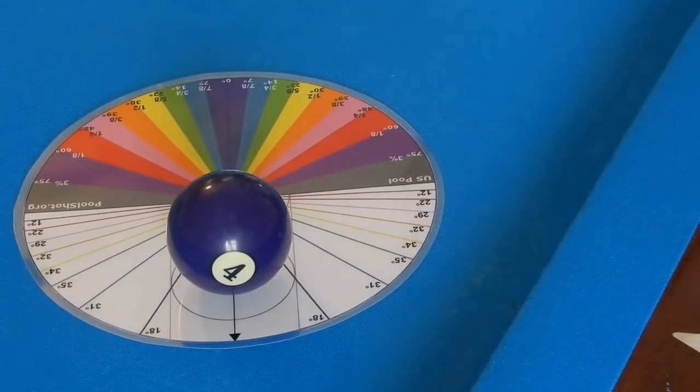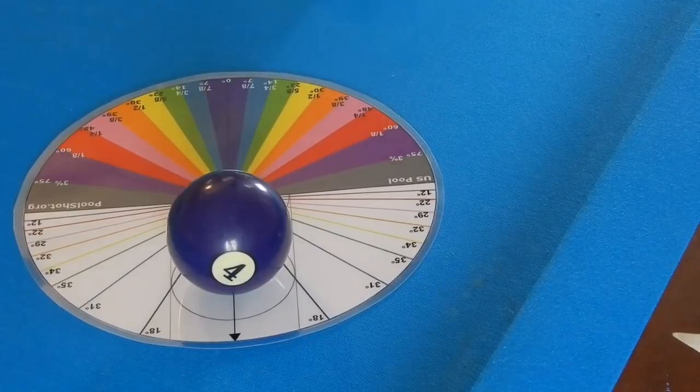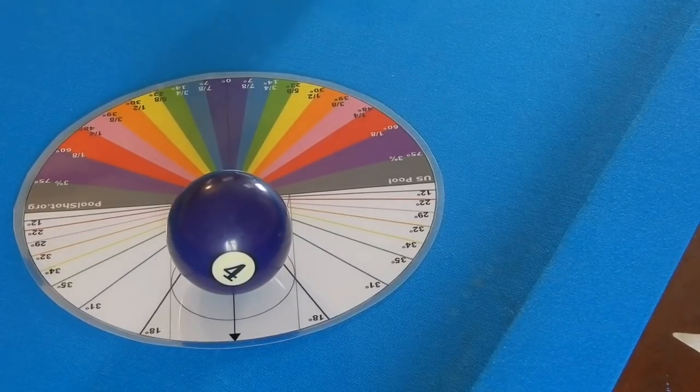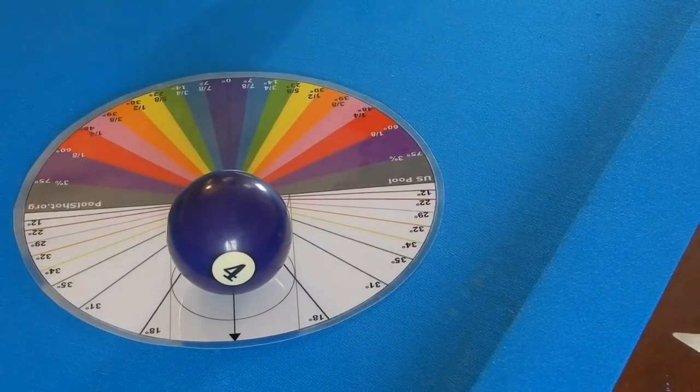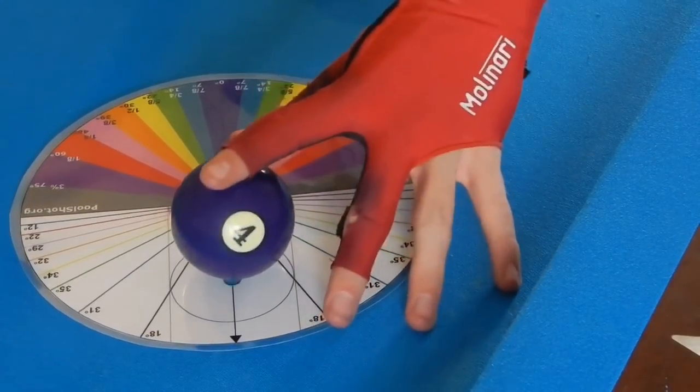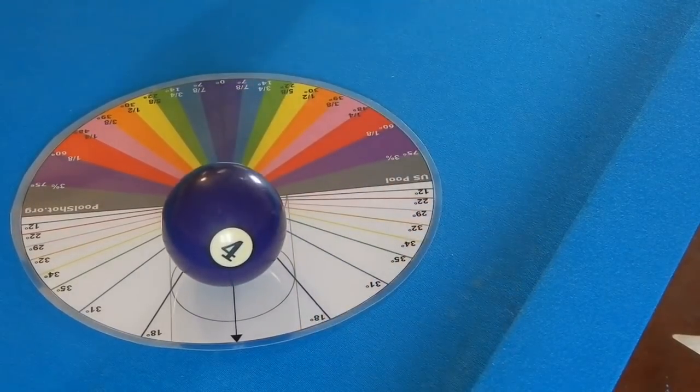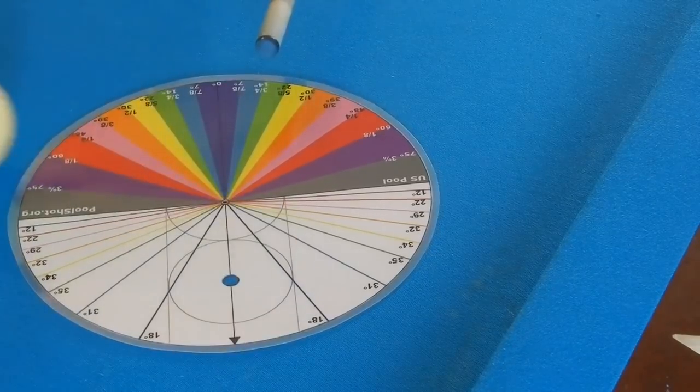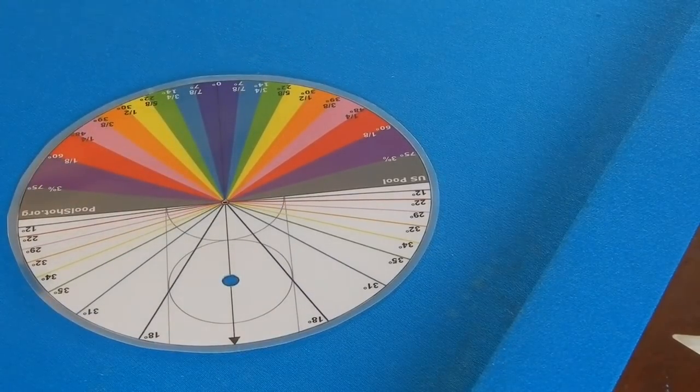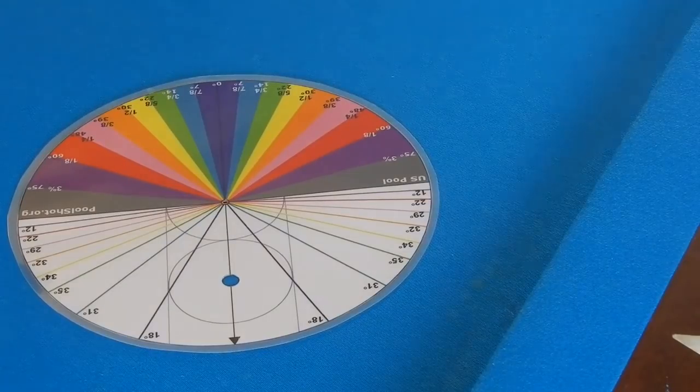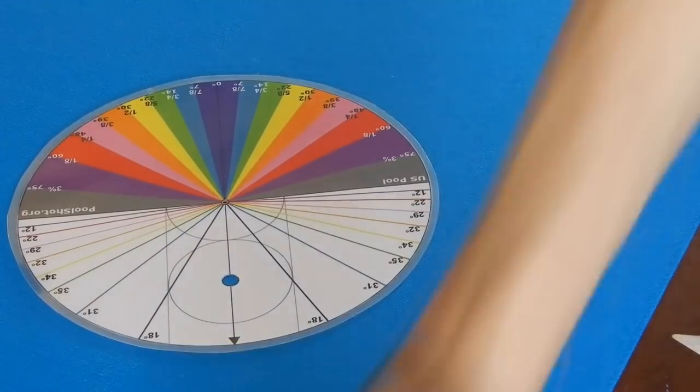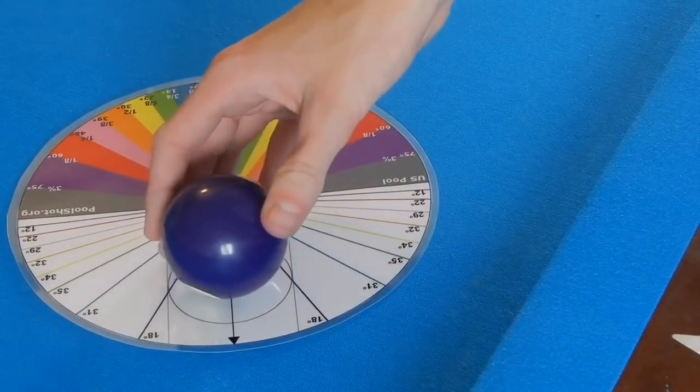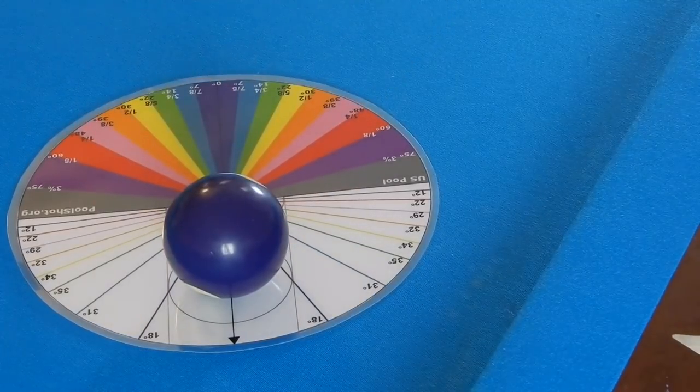If we're using lower draw, let's put it back on the 14-degree line. If we're just using a little bit below center, you see we're going to go closer to that tangent line. And if we use follow, we're going to go into the follow zone.